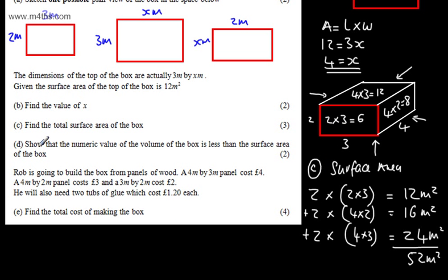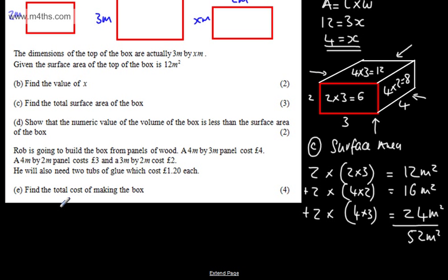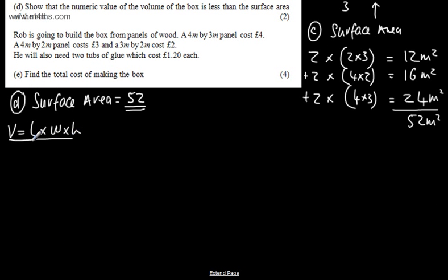Let's now look at part D for 2 marks. We need to show that the numeric value of the volume of the box is less than the surface area of the box. So all we're doing is looking at the number. So what we can say then now is the surface area. We've already found the surface area. Surface area is going to be equal now to 52. That's the numeric value. I can say the volume is going to be the length multiplied by the width multiplied by the height. If you're unsure on the volume of the cuboid, this is a prism and we can use the front of the exam paper to find the formula.